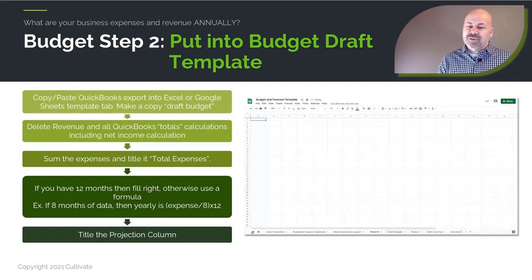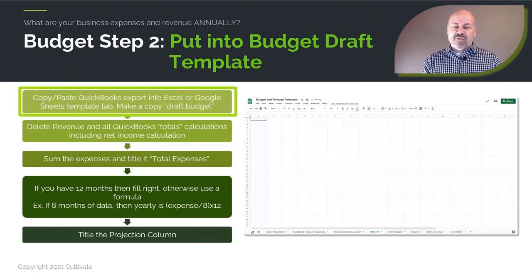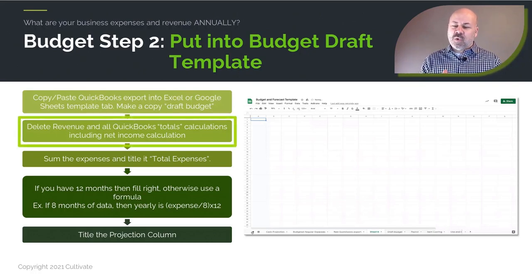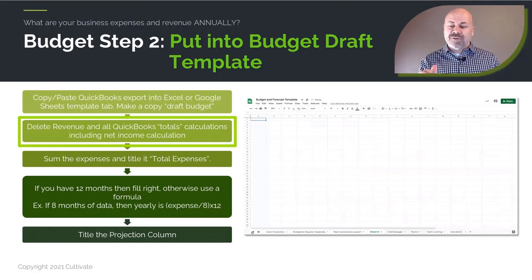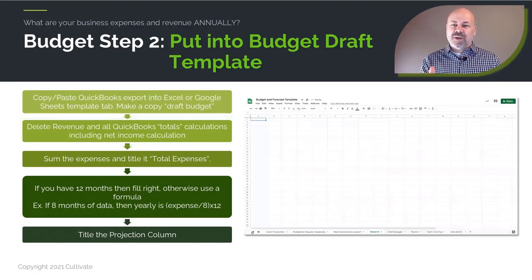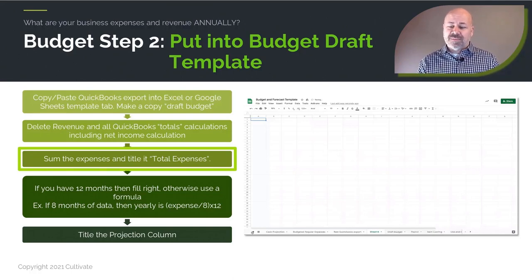The next step is to put it into the budget draft template we provide as a member — just copy and paste the spreadsheet into our template. Then delete the revenue and all the QuickBooks extra totals and calculations; we're going to track revenues separately and don't need QuickBooks' subtotals. Delete the totals for specific expense sections as well, and then select the entire column and do a sum to get a fresh total of those columns in the draft template.